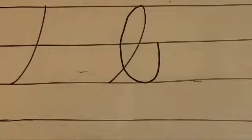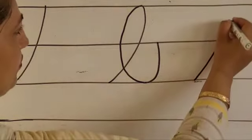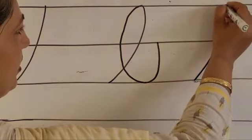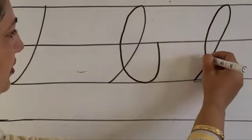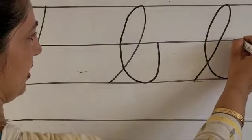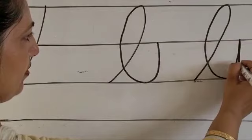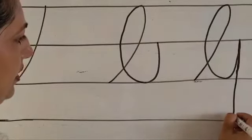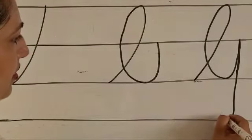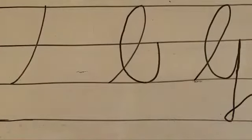Again same procedure: start from the third line up to the first line, make a left side curve down to the third line, then move up past the second line, go back to the fourth line, and make a loop. This is the letter G.